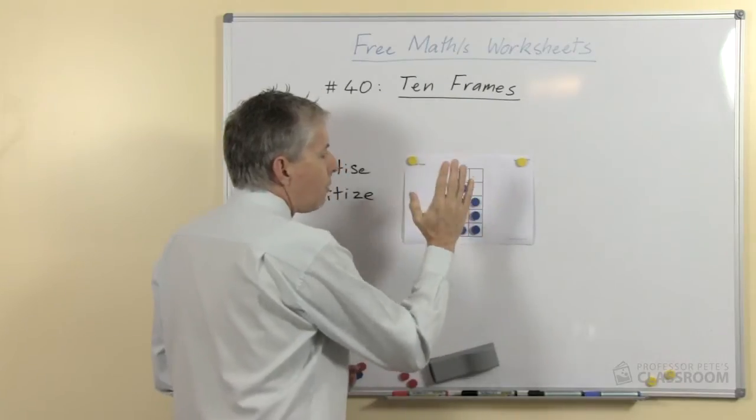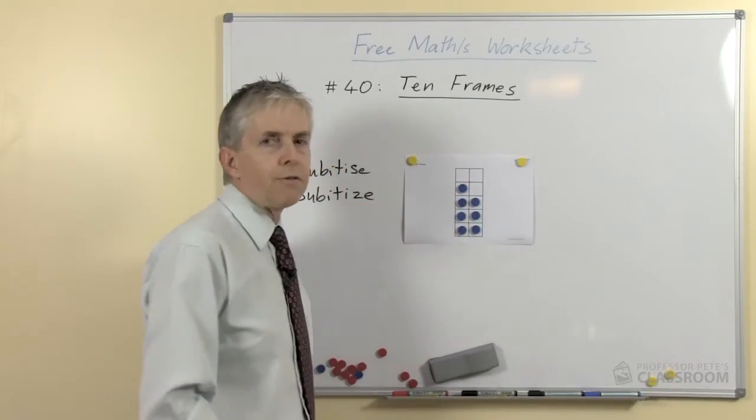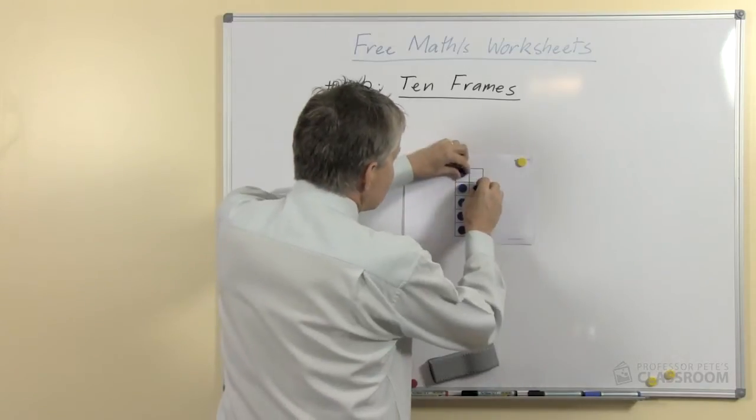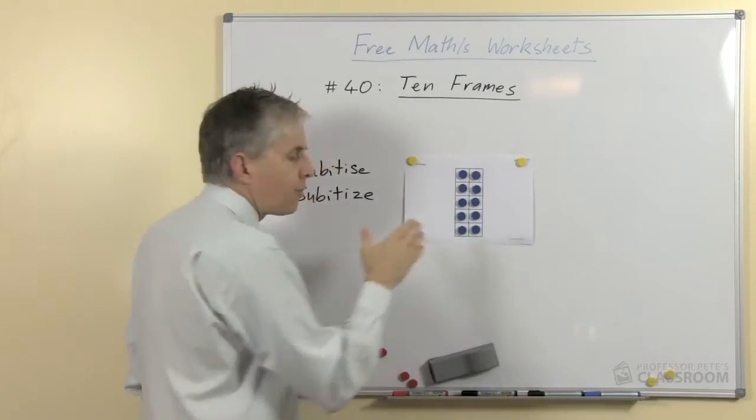So every number that we represent with a ten frame can be easily subitized. So we can go all the way to nine, we can go all the way to ten, there's no difficult numbers there.